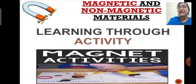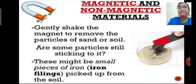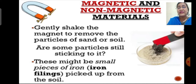For this activity, you require a magnet. Rub that magnet on soil or sand, then pull out the magnet. Will there be some particles of sand or soil that will stick to the magnet? Now slowly remove the magnet from the soil or sand and gently shake the magnet to loosen the particles which are actually not sticking to the magnet. These are the sand or soil particles which do not stick to the magnet, but there will be particles that will still be sticking to it.